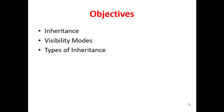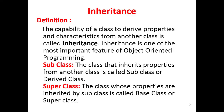In today's session we will be discussing about inheritance, visibility modes, and the different types of inheritance which are supported in C++. The capability of a class to derive the properties and characteristics from another class is called inheritance. It is one of the most important features of object-oriented programming, and it helps for reusing code, which reduces development time and rework.